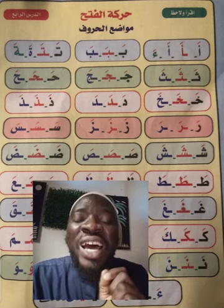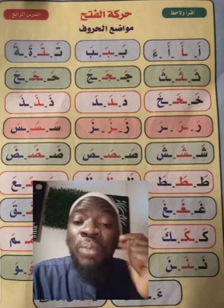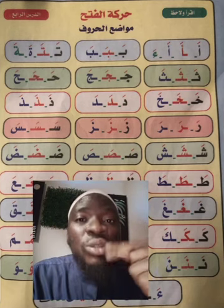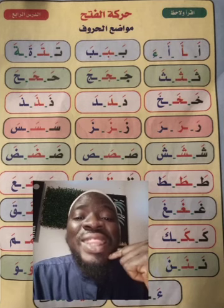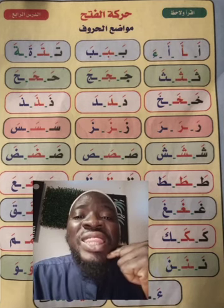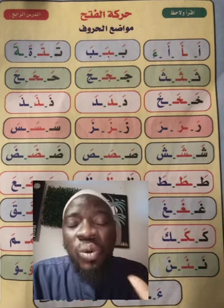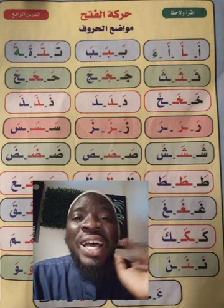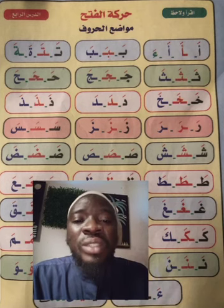The second letter that has the shape of Dal is Dhal. Dal, Dhal — you have to place the tongue in between the teeth. D, D, DAL. Dhal with Fathah: THA, THA, THA.